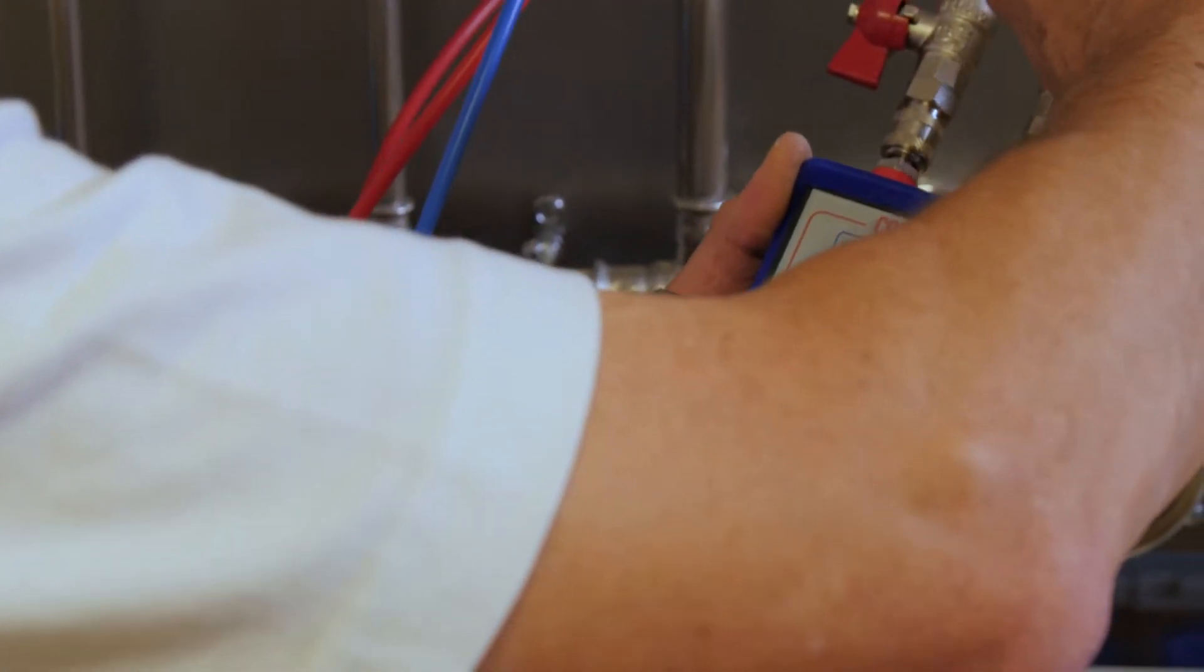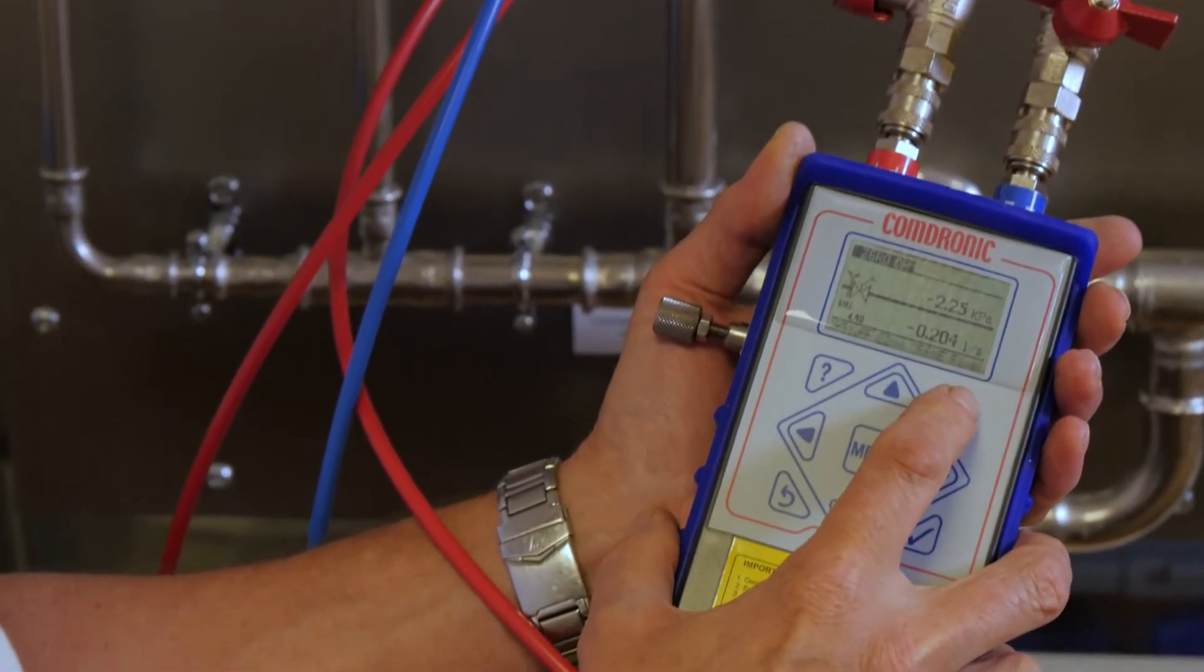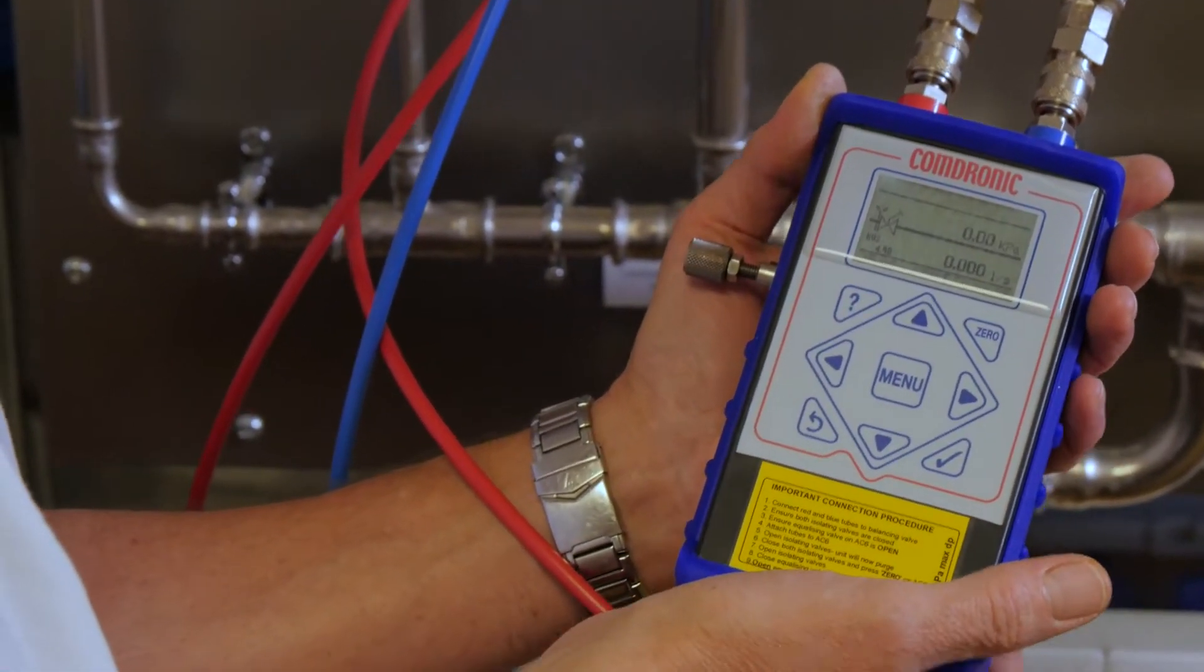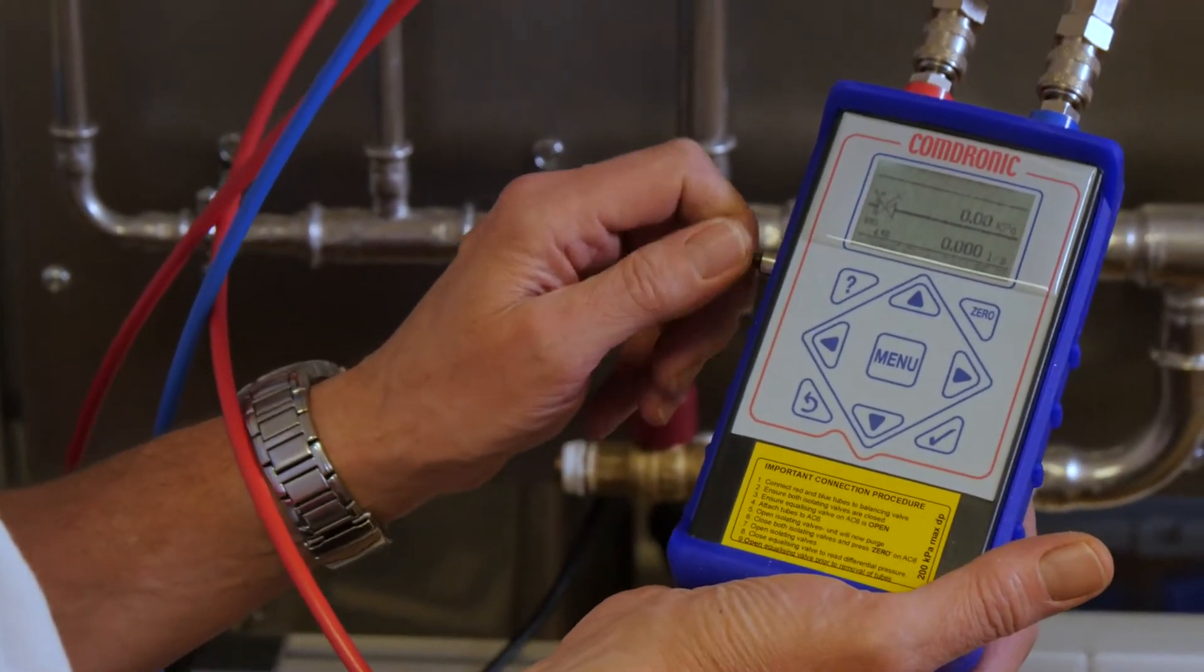We're then going to close those valves again and press the zero button on the unit. So the sensor is now at zero waiting to take a flow measurement reading or a differential pressure reading.